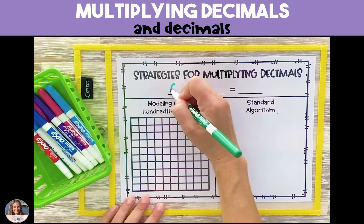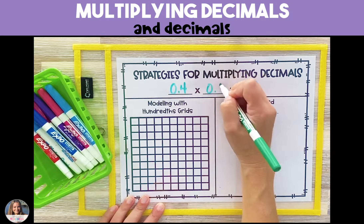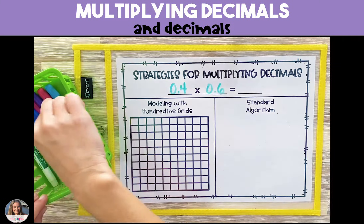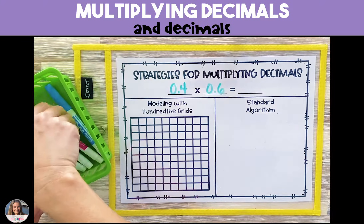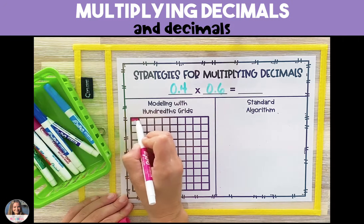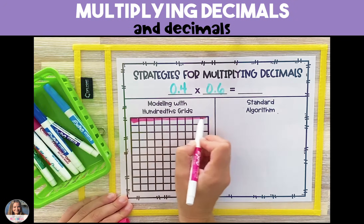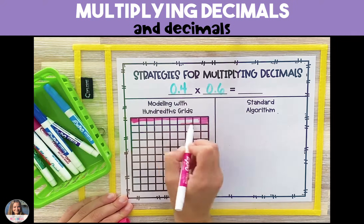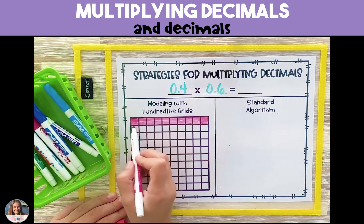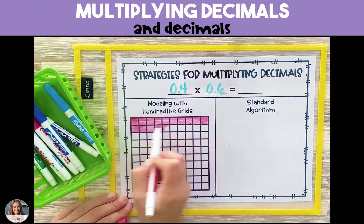To multiply decimals by decimals we can use two different methods: a visual model and the standard algorithm. Our visual model is a 10 by 10 hundredths grid, and every row and every column is worth one tenth of the whole. Each individual square is worth one one-hundredth of the whole.